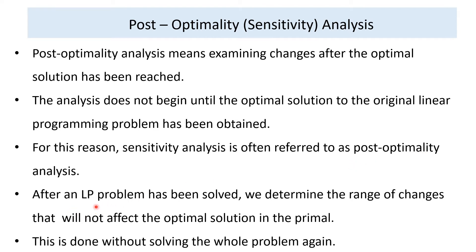After a linear programming problem has been solved, we determine the range of changes that will affect the optimal solution in the primal problem. This is done without solving the whole problem again. Once we find the optimal solution, we analyze how much the range of changes can or cannot affect the optimal solution without resolving the whole problem.